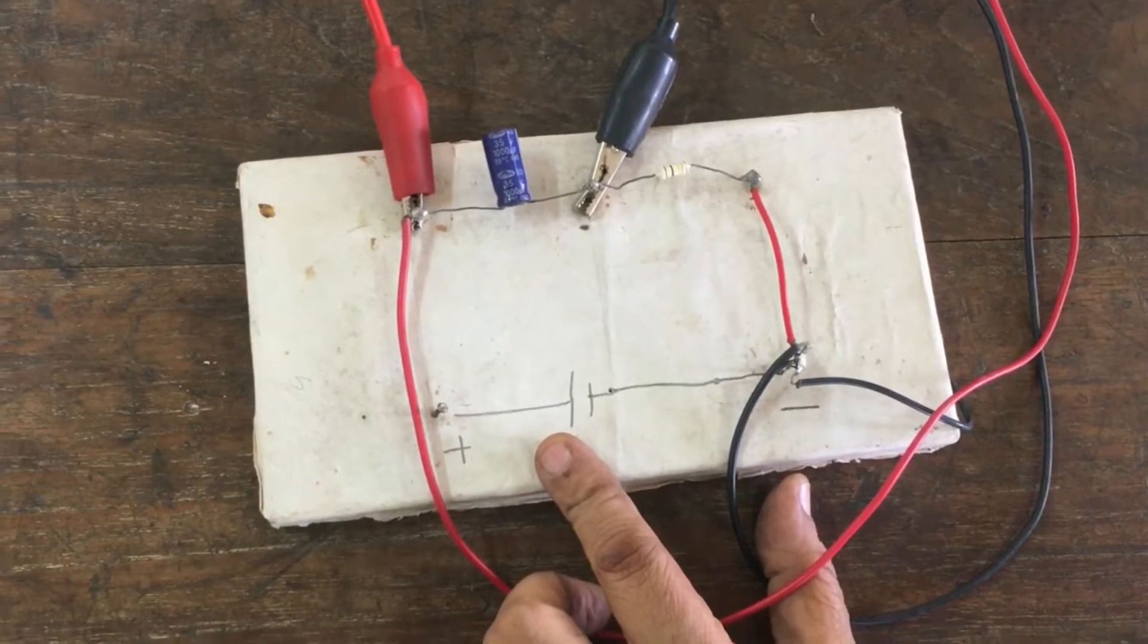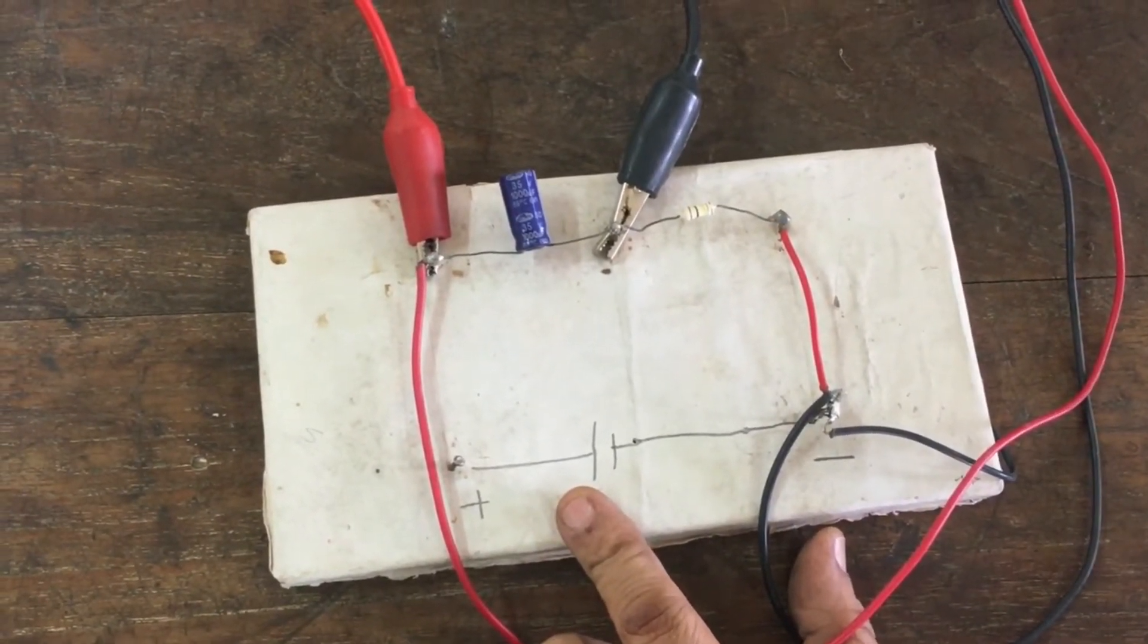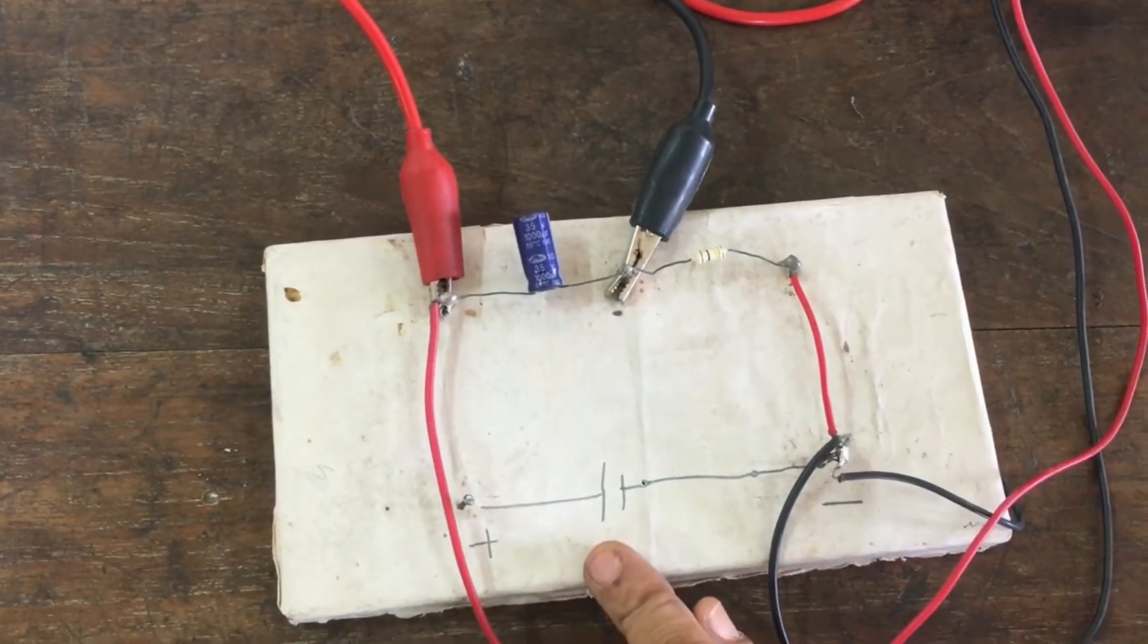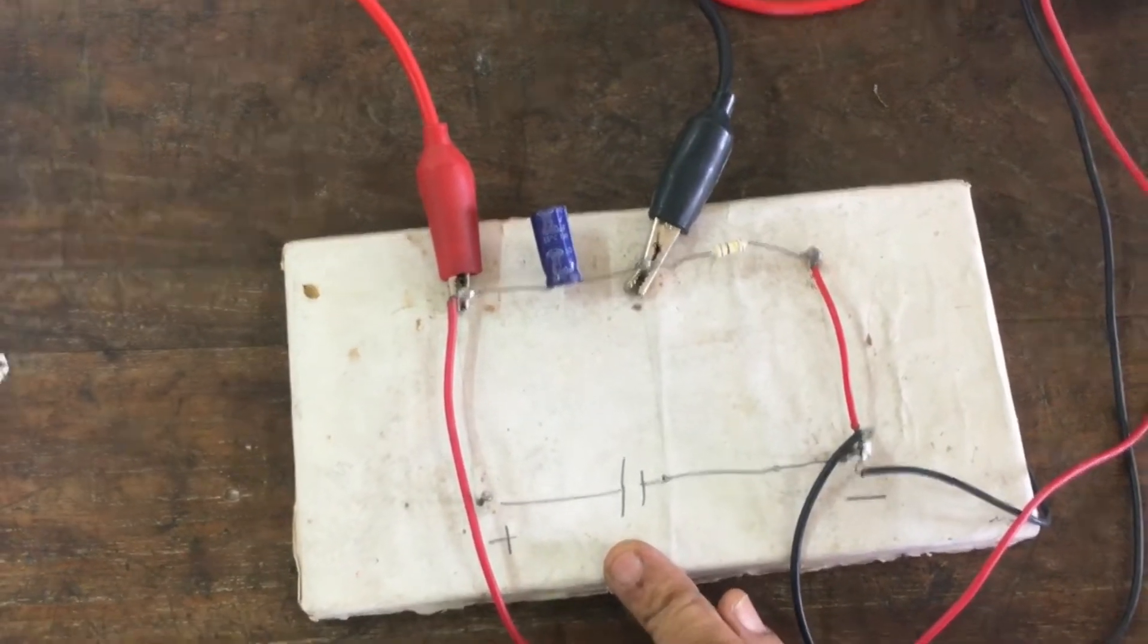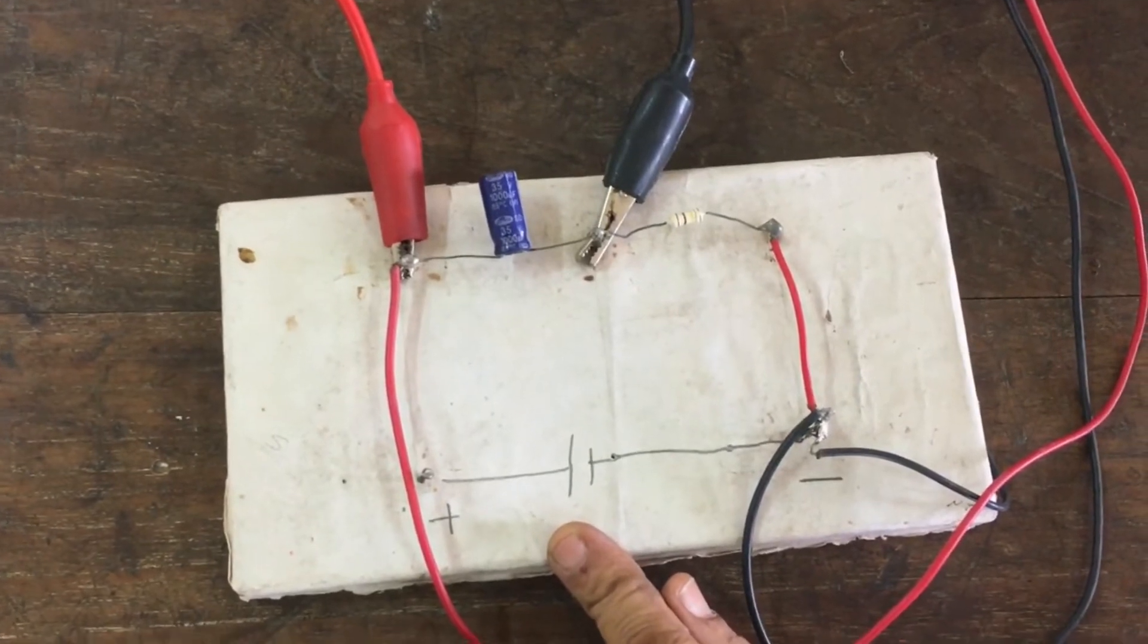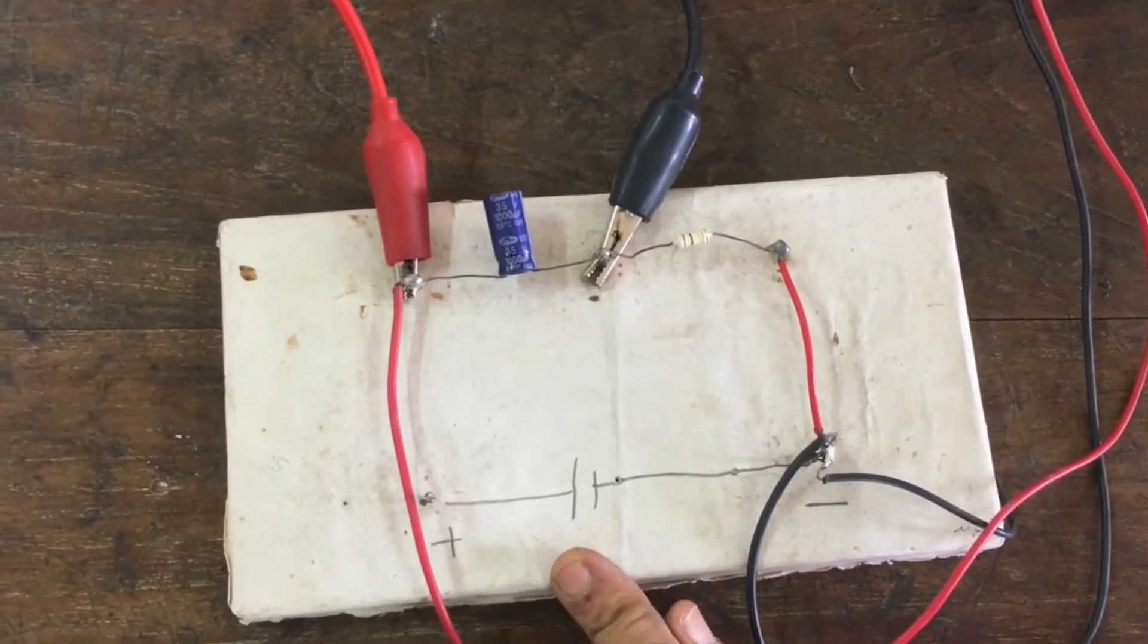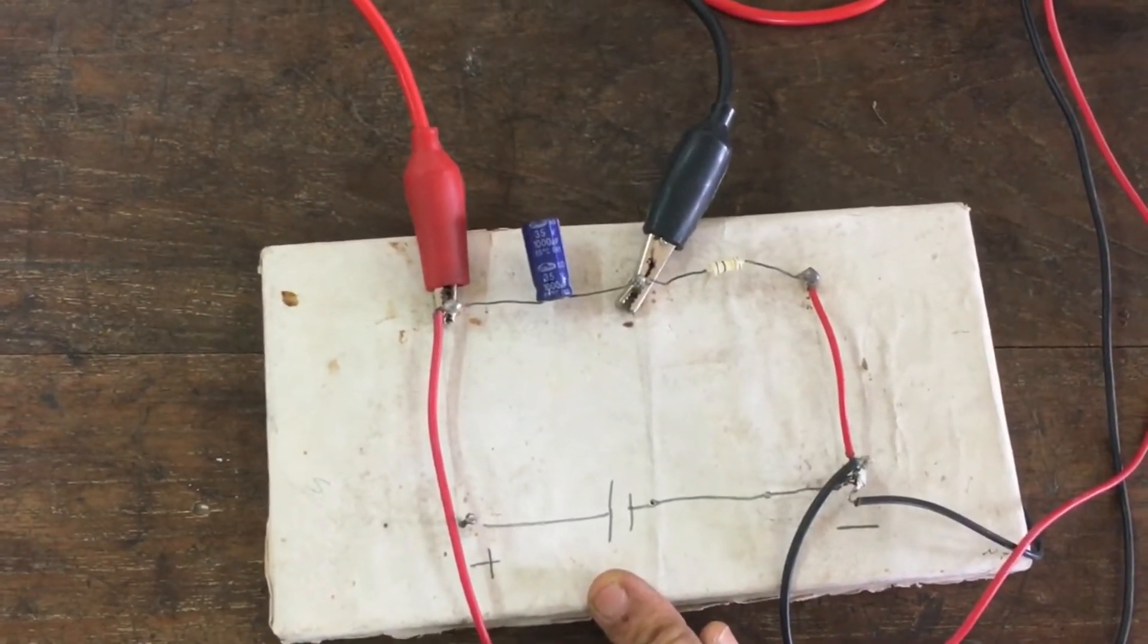Today's practical is charging of the capacitor. Close the gap between terminal 1 and 3. Start the clock simultaneously. Record the time and the voltage drop across the capacitor every 20 seconds till the voltage across the capacitor becomes constant.